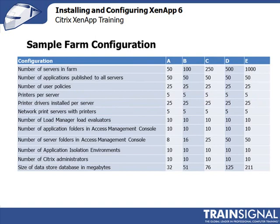A sample farm configuration shows configurations A through E based on all of these metrics. For example, sample farm configuration A has a database that is 32 megabytes in size — a very small footprint. From there the size goes up. You'll be able to fit your environment into one of these configurations when telling your SQL, Oracle, or DBA how big you want the database. Use this table to understand what your environment looks like now and in the future to give them the size requirements.